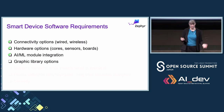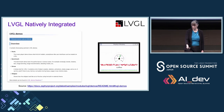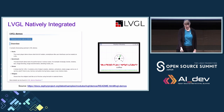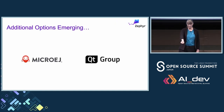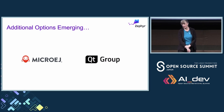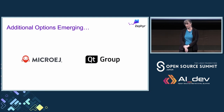What about graphics? We need graphics for those information appliances. LVGL is already natively integrated into the project, and it can run a desktop environment as well as help speed up development. As of last month, we have two new members in the Zephyr project — Micro Edge and the QT group — both of which specialize in graphical interfaces. So you'll be seeing more options and more products emerging with these interfaces on Zephyr in the years to come.